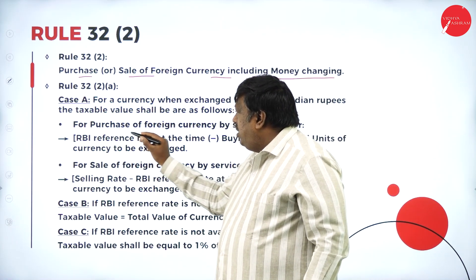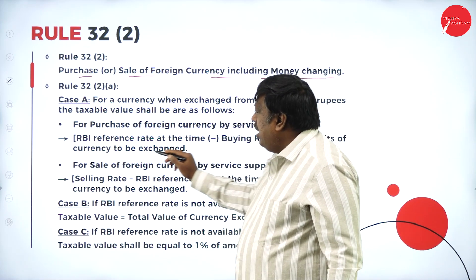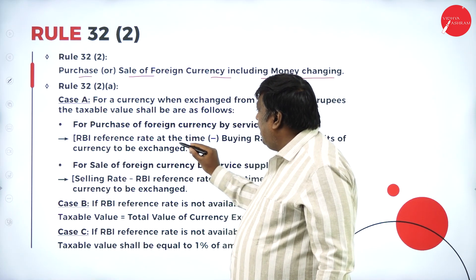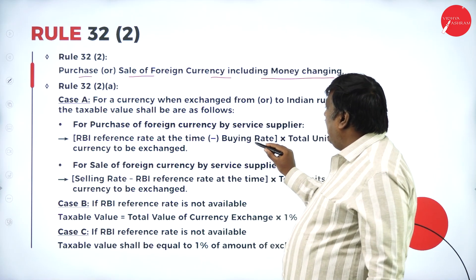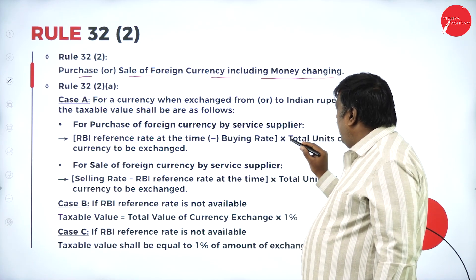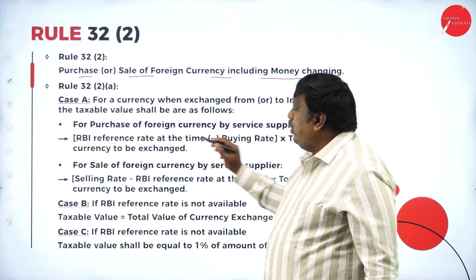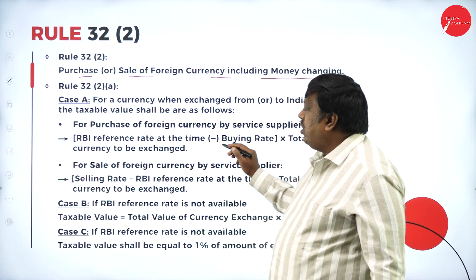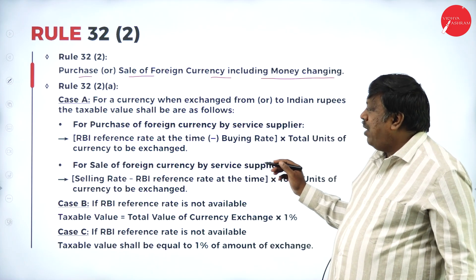For purchase of foreign currency by a service supplier, the formula is: RBA reference rate at the time minus buying rate, multiplied by the total number of units of currency to be exchanged. This is the formula we apply.